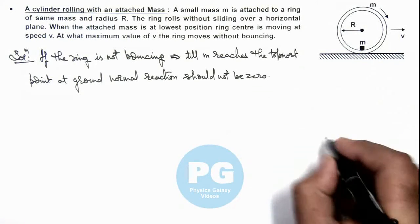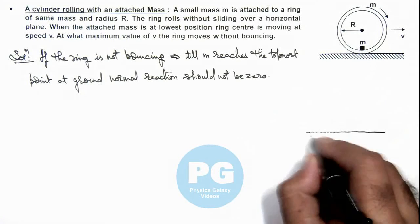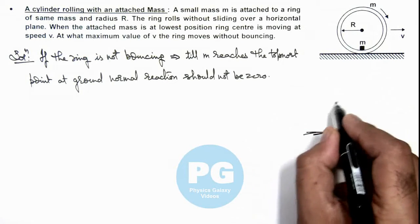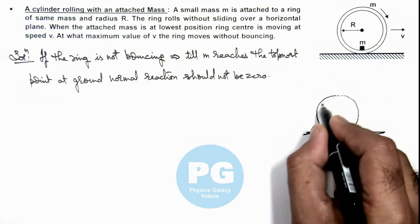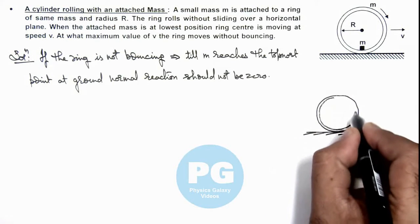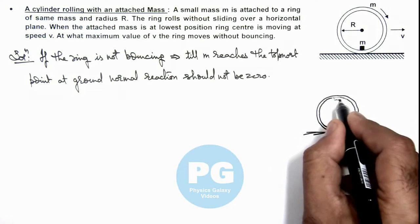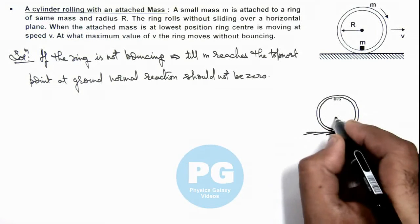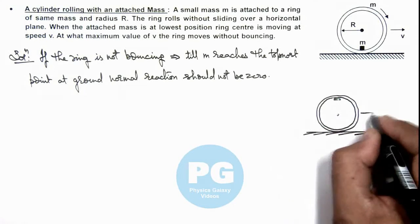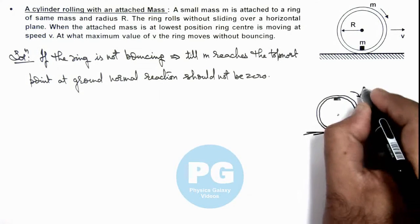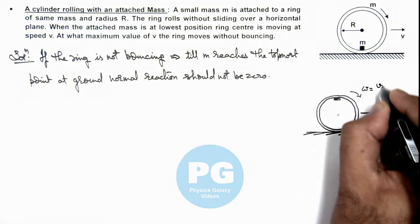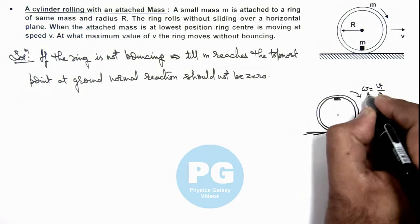So in this situation we can draw the case when this small m reaches the top most point. When the ring is moving and this small m mass reaches the top most point, at this instant say the system is moving with a velocity v1, and in case of pure rolling its angular speed will be v1 by R.